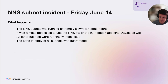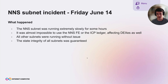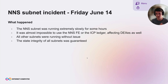A very brief summary of what happened: the NNS subnet was running extremely slowly for some hours, and that made it almost impossible to use things on that subnet, such as the NNS front-end dapp or the ICP ledger. That in turn affected other dapps as well — for example, DEXes that tried to talk to the ICP ledger noticed this problem.